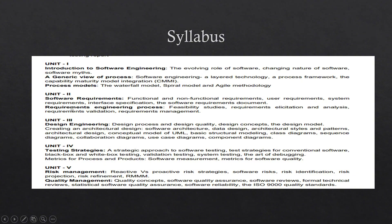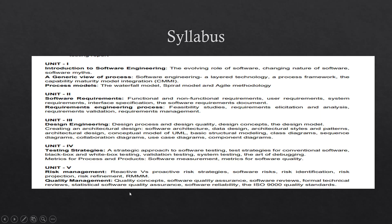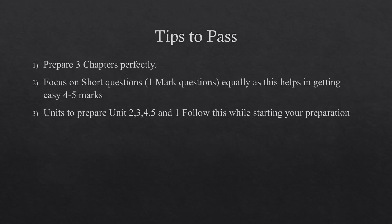From Unit 2 we have software requirements and requirement engineering process. Whenever the unit is divided into two equal halves, one question from each half is compulsory, so prepare accordingly. Unit 3 is design engineering — I'll discuss important questions on this shortly. Unit 4 is testing strategies covering alpha testing, beta testing, white box testing, black box testing, and software measurements. Unit 5 is divided into risk management and quality management, with one compulsory question from each.